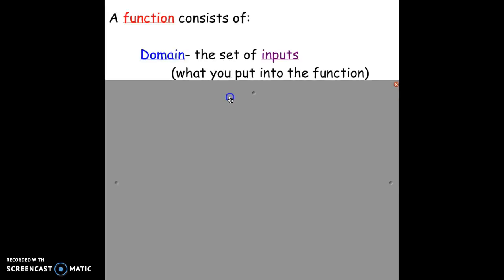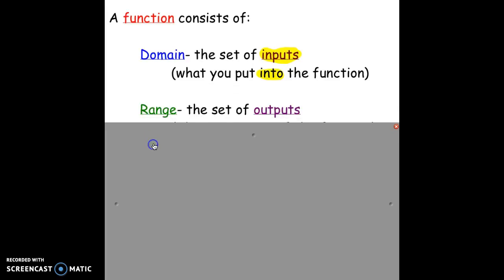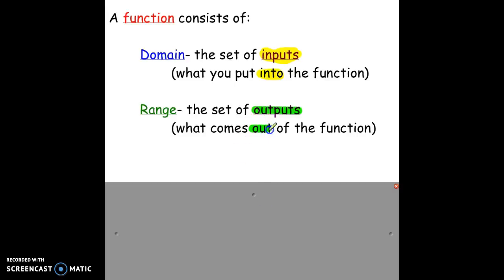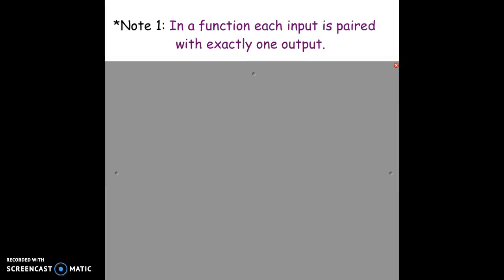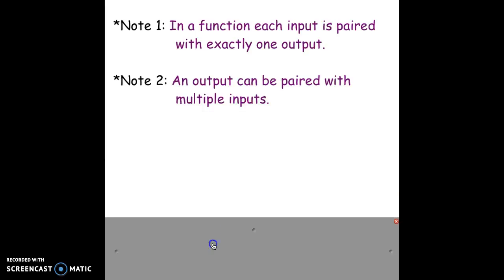A function consists of a couple different things. You've got domain - those are the inputs or the set of things that you put into the function. Your range is your set of outputs, or the things that come out of your function. In a function, each input is paired with exactly one output. An output, however, can be paired with multiple inputs.